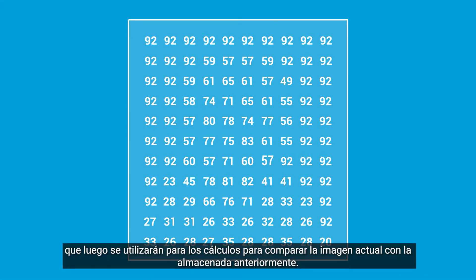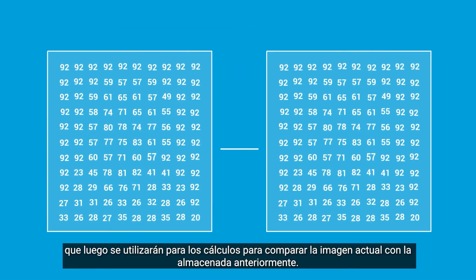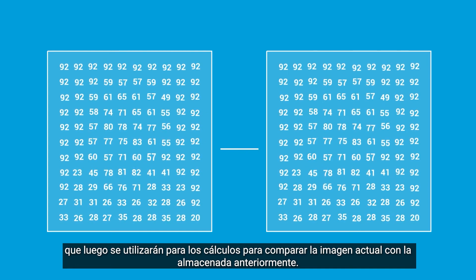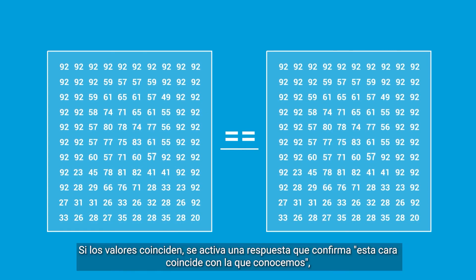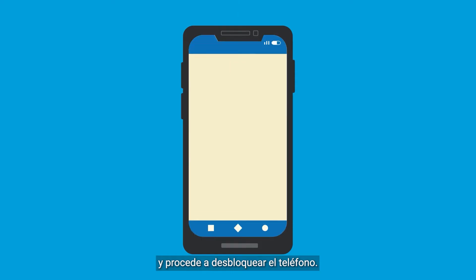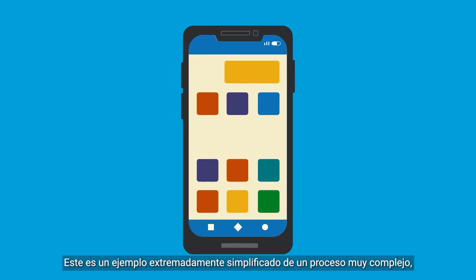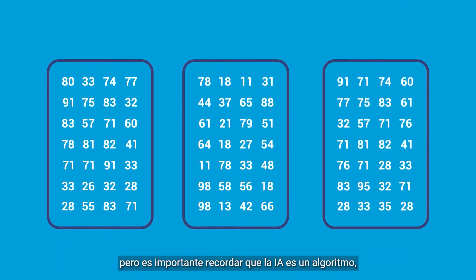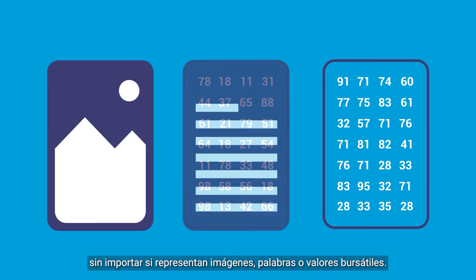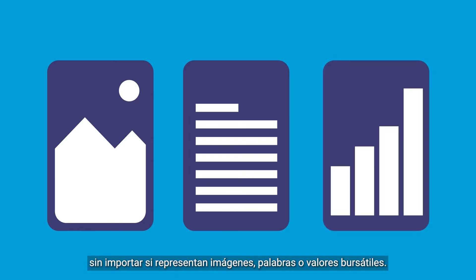The pixel values are then used for calculations to compare the current image with the ones stored before. If the values match up, it triggers a response confirming this face matches the one we know, and proceeds to unlock your phone. This is an extremely simplified example of a highly complex process, but it is important to remember that AI is an algorithm that only deals with numbers, whether they represent images, words, or stock values.